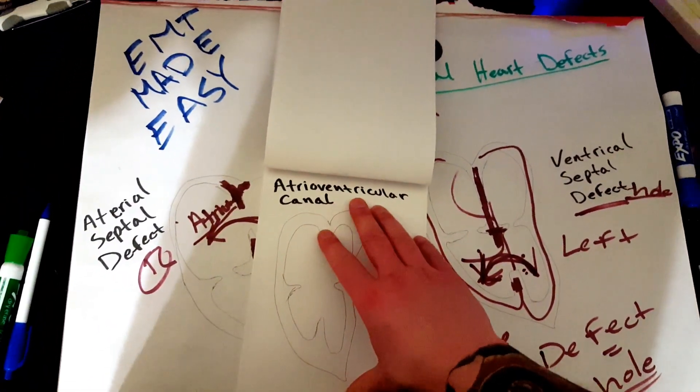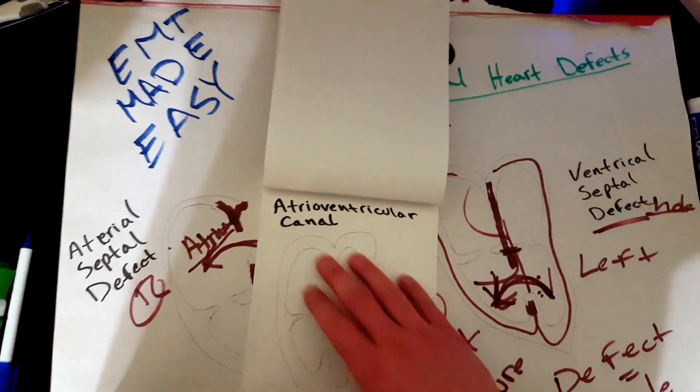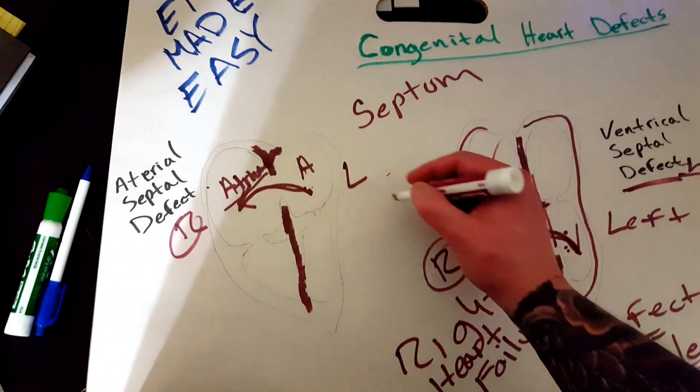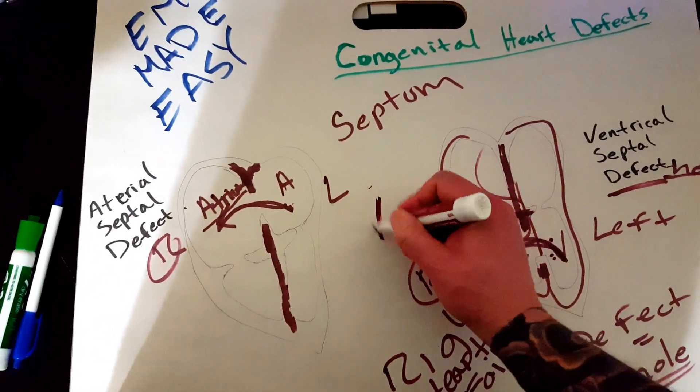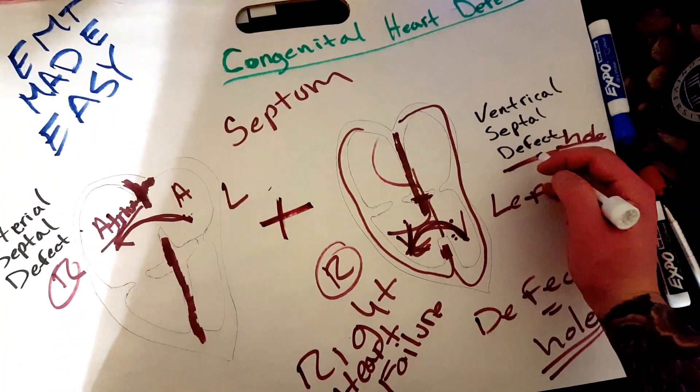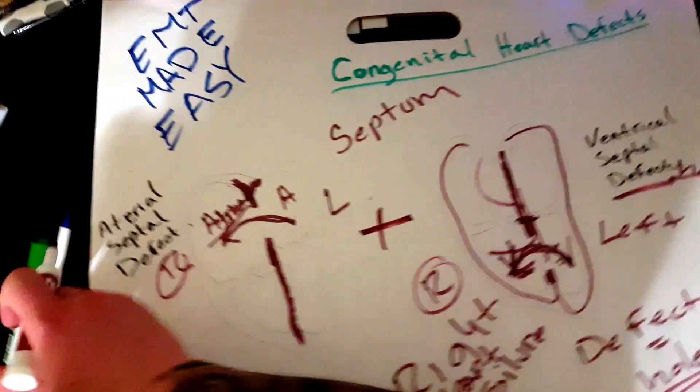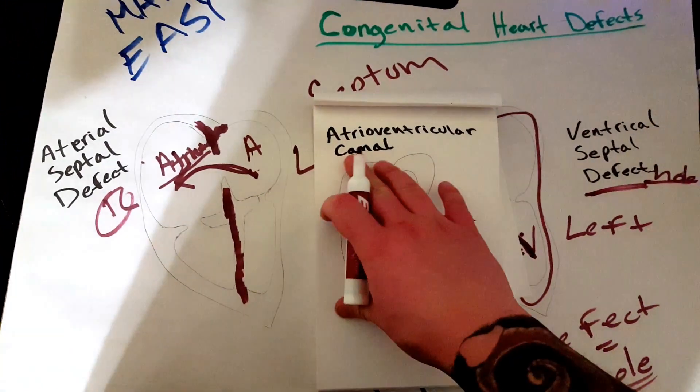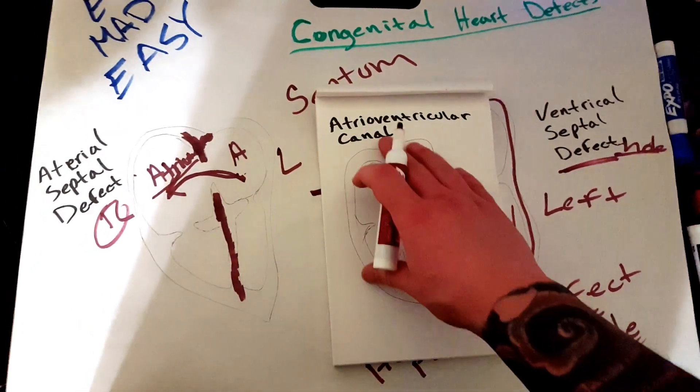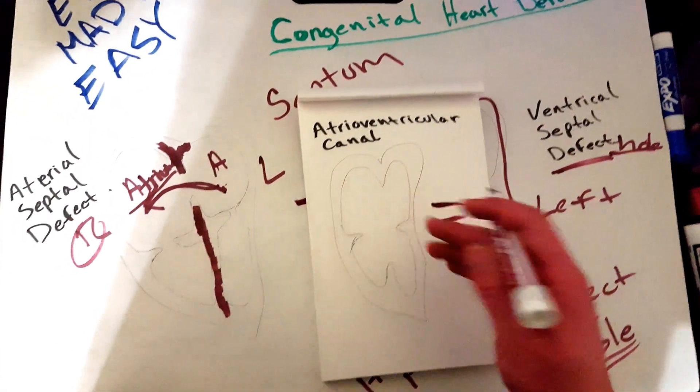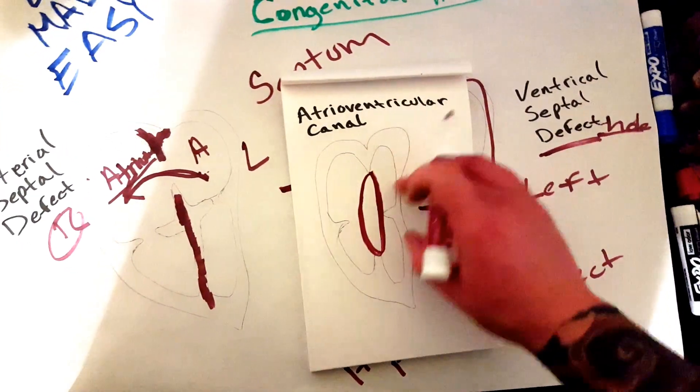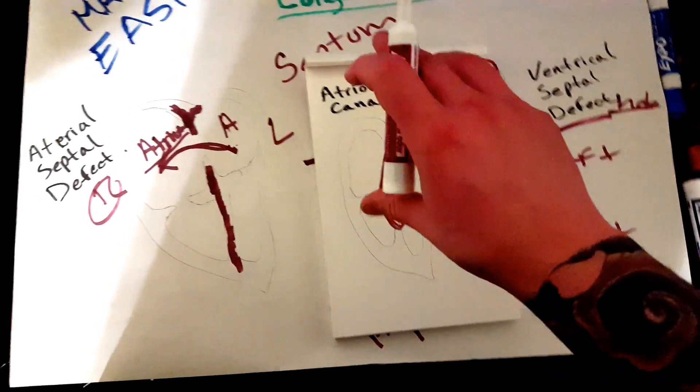You have your atrioventricular canal, which is a combination of these two. So, atrial septal defect plus ventricular septal defect equals this, atrioventricular canal. So, when you hear of this, atrioventricular canal, that means that you have a really, really big hole in the middle of your heart and it's affecting both the atriums and the ventricle portion.